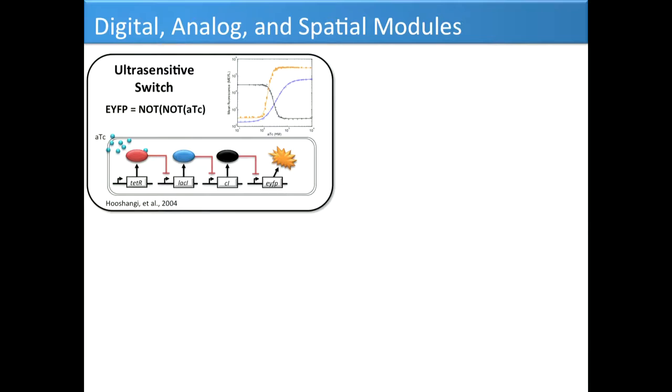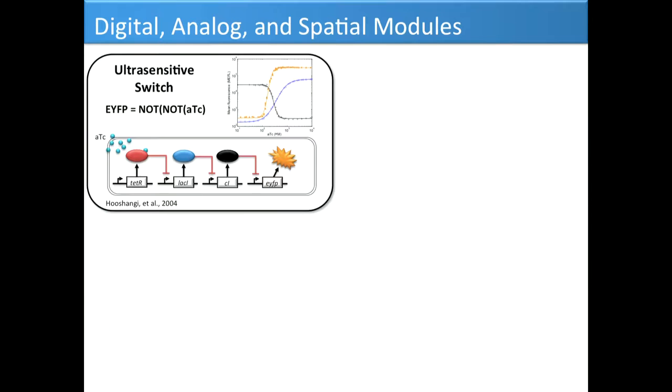Then I said, let's build a circuit out of these components. The specific function is an ultra-sensitive switch where yellow fluorescent protein is the NOT NOT of the small molecule inducer ATC. That asks the question: can we take these noisy biological components and put them together to create reliable digital behavior? We put repressors in a cascade and observed that the blue is the first stage, black is the second stage, and yellow-orange is the last stage. The input-output response gets more digital as the system gets more complex. That gave us hope that we can build reliable digital behavior in living cells.